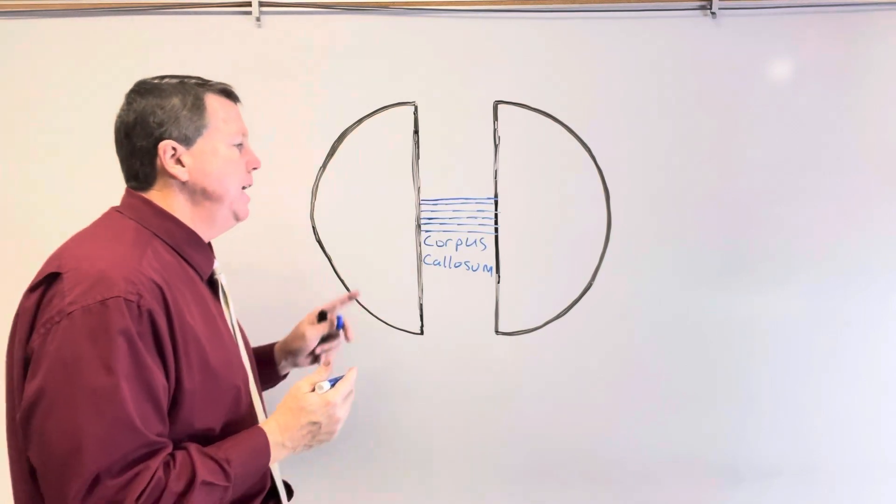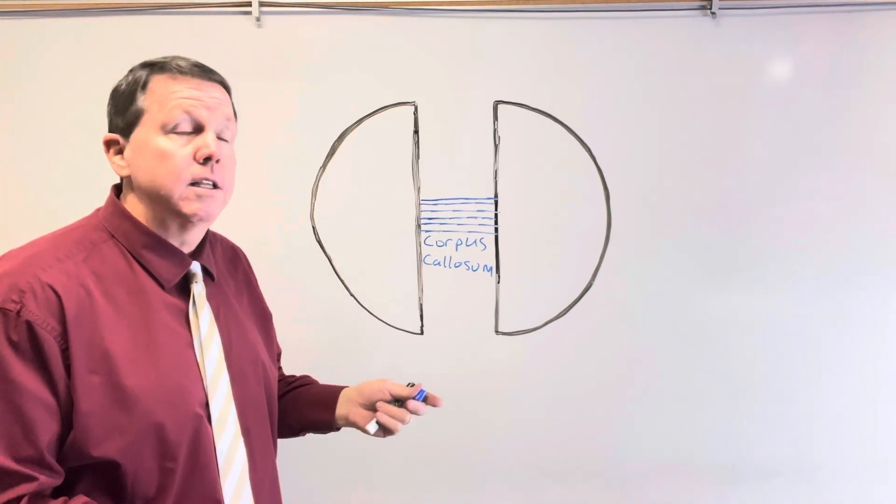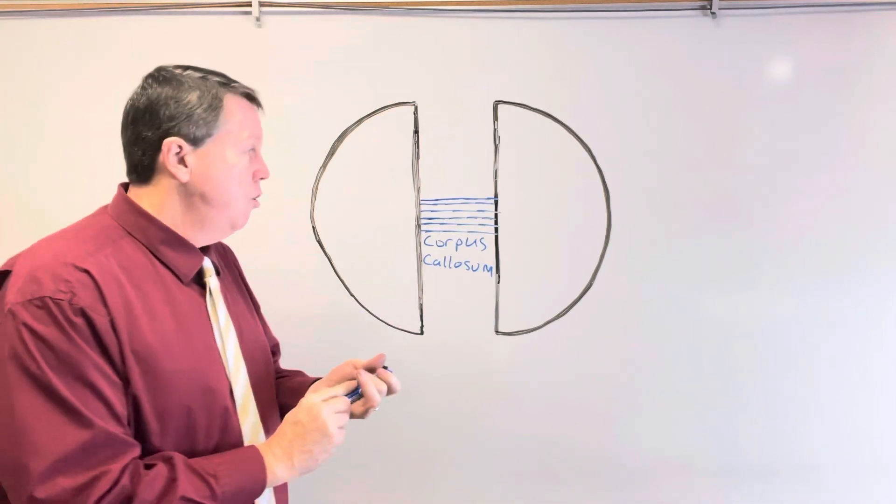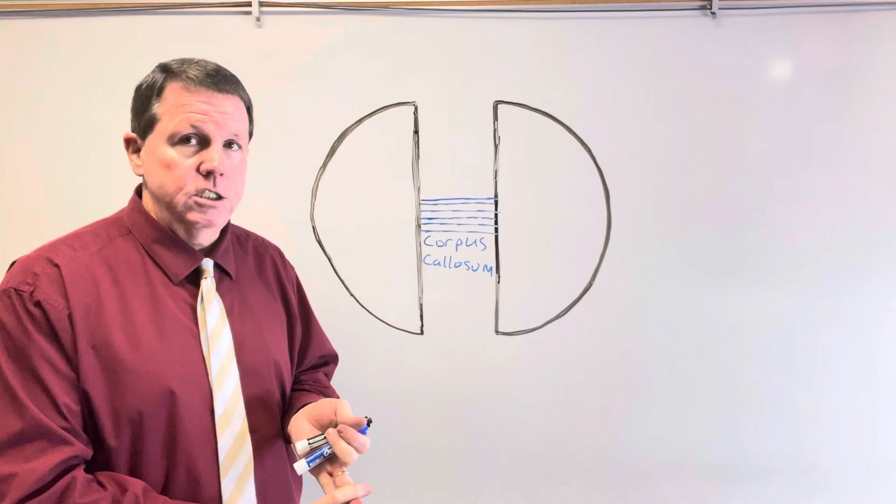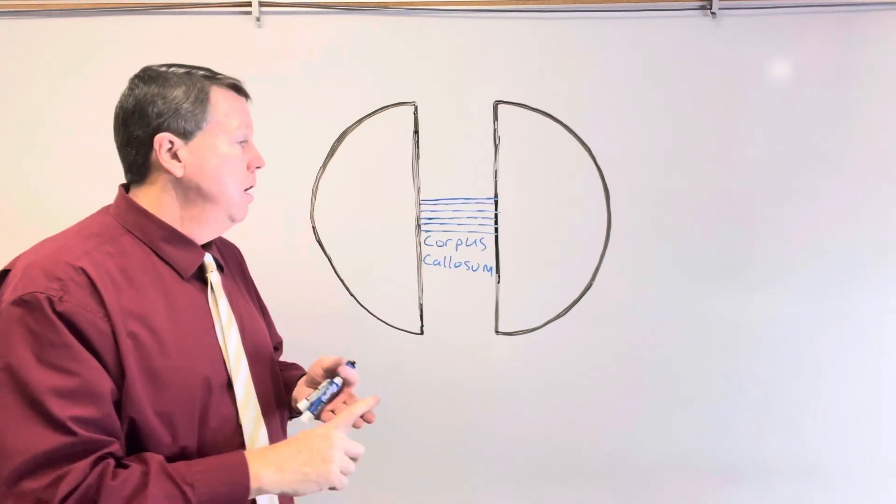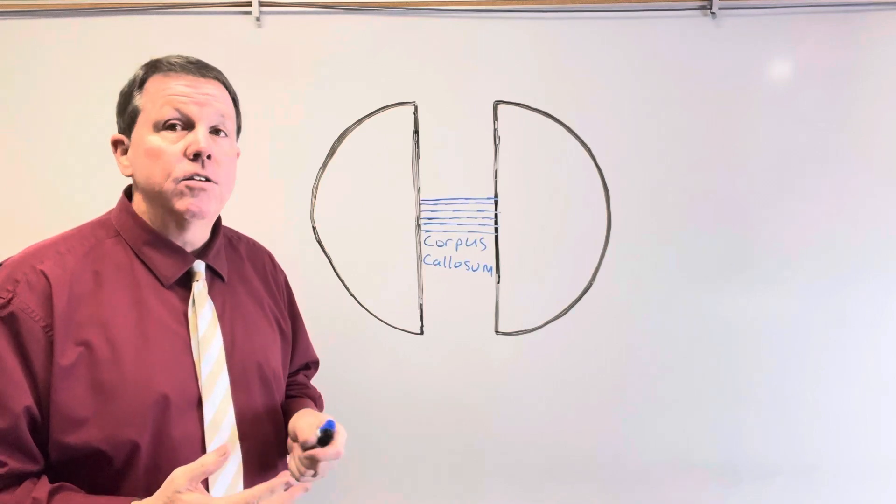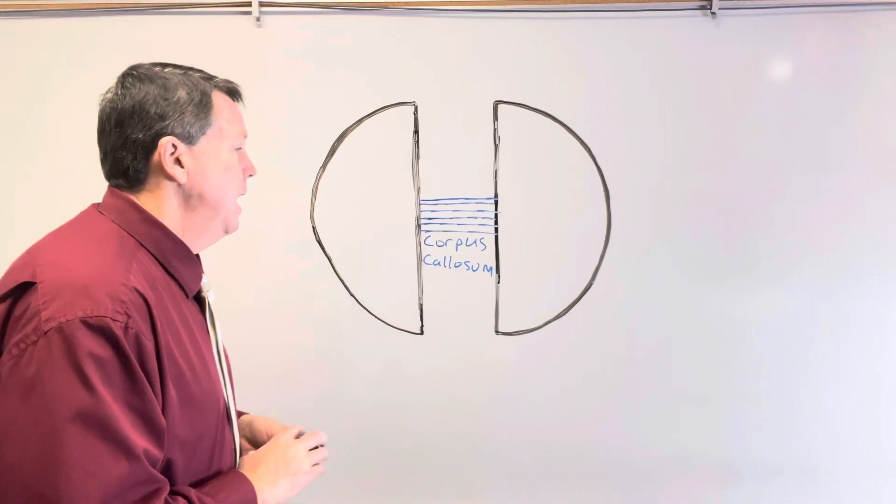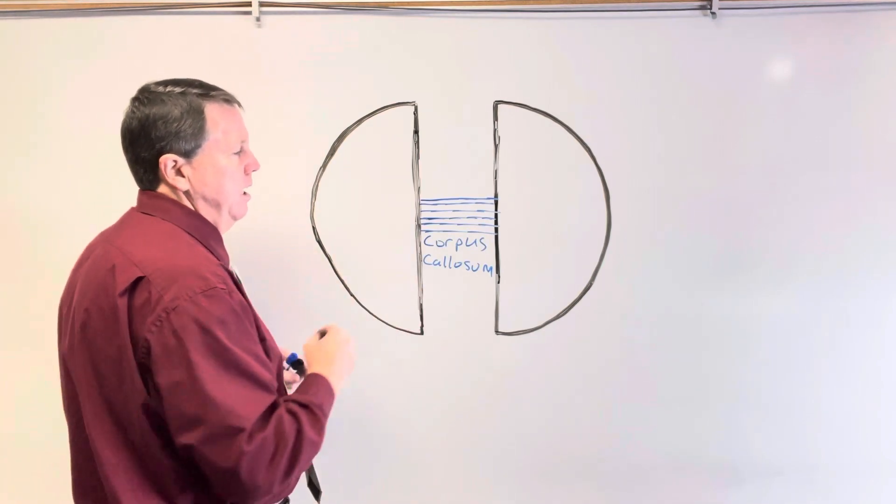Now, what can happen is, in some people, this doesn't develop. Now, why won't it develop? It could be several different things. One, it could be genetic. Two, it could be fetal alcohol syndrome, if the mother drinks while the baby's developing. It could be due to something called Chiari malformation type 2. It could be due to some type of trauma. And it can be genetic.